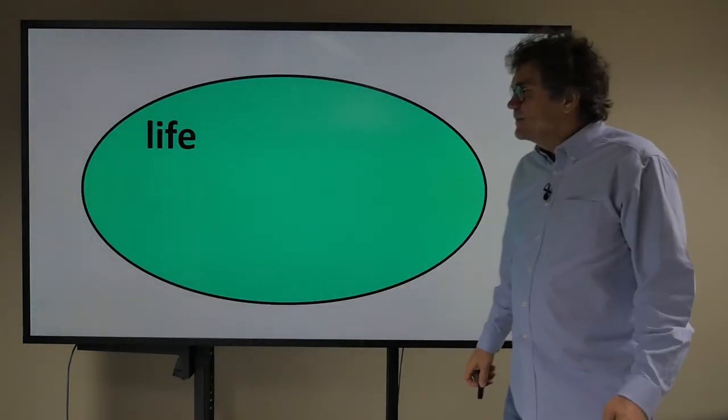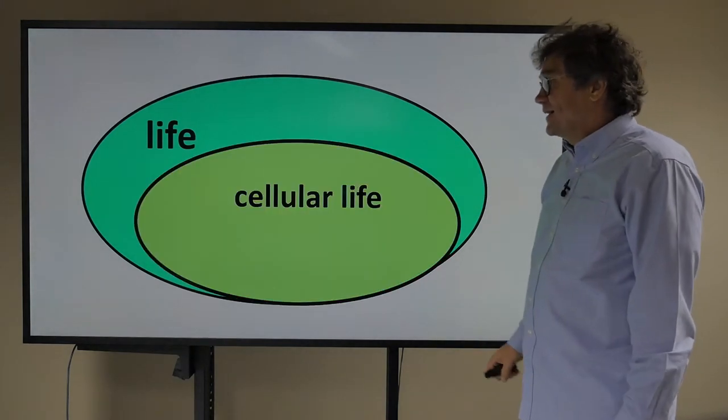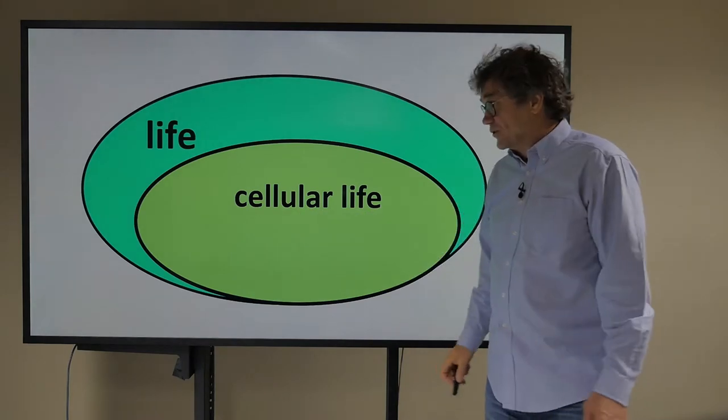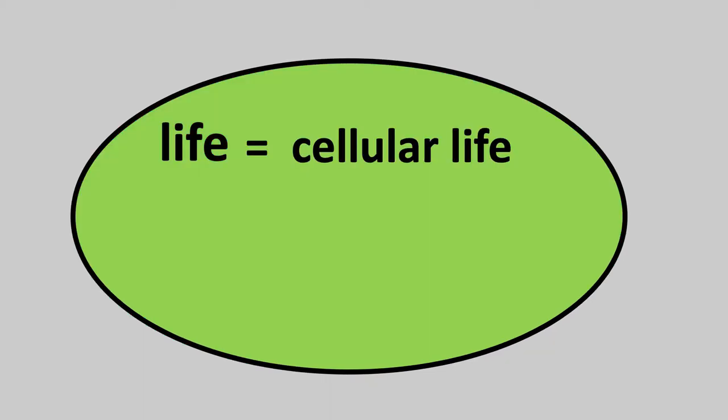Now let's suppose that this is all life in the universe and let's suppose that this is the cellular life in the universe and it's not obvious that life and cellular life are the same thing. Here we're allowing for the idea that maybe some life is not cellular. But maybe that's wrong, maybe all life is cellular. How can we resolve this issue? One way is to look at life on earth.